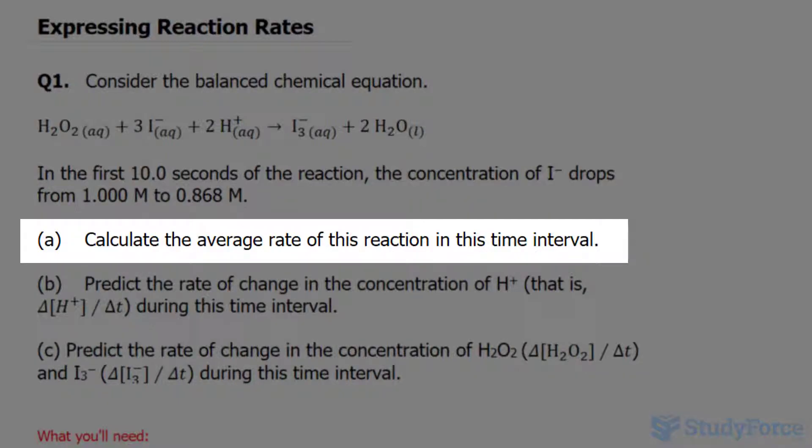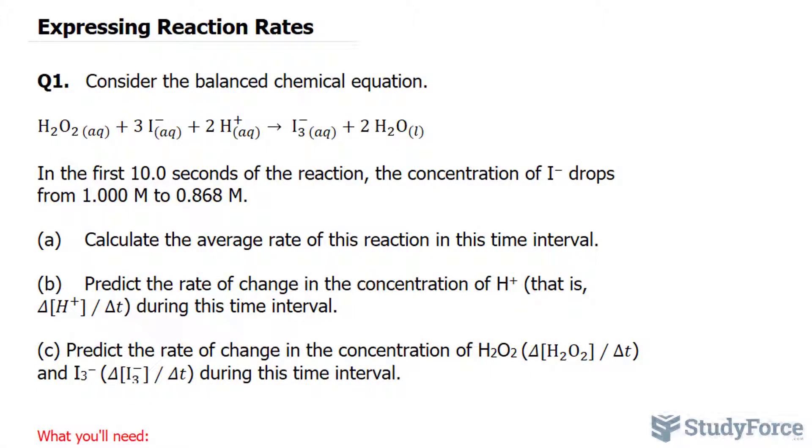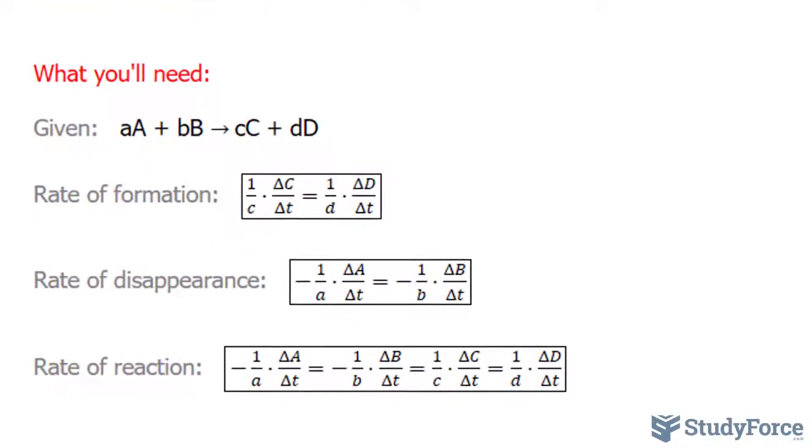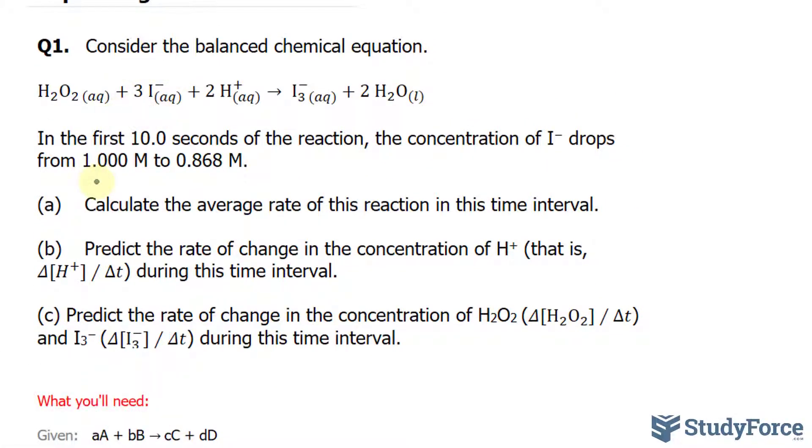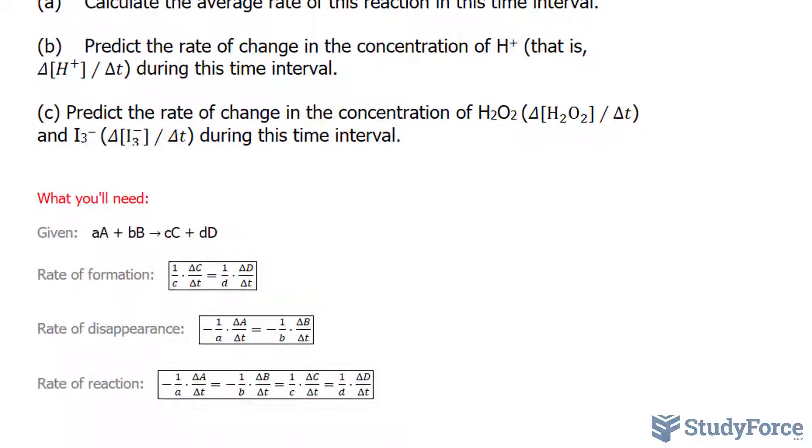We have to calculate the average rate of this reaction in this time interval. To do this, we'll need to understand the following relationship. So let's pretend that we have A plus B and it yields C plus D. The rate of formation for these two molecules is represented here and the rate of disappearance is shown here. And I want you to concentrate on the rate of disappearance. We have this factor of negative 1 over A times this relationship and it's equal to negative 1 over B times this factor. And that's the relationship we'll be using here because this molecule is disappearing and forming triiodide, this molecule. And this coefficient 3 will be represented as, let's say, A in this formula.